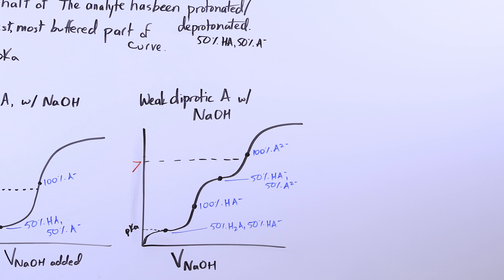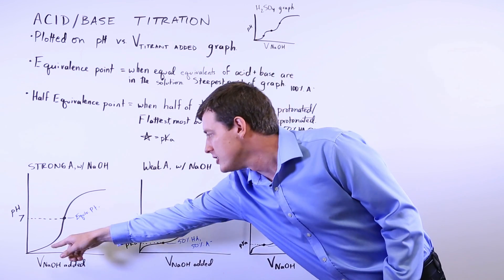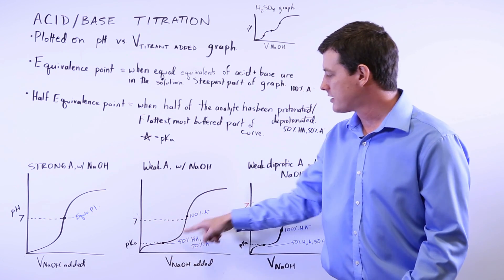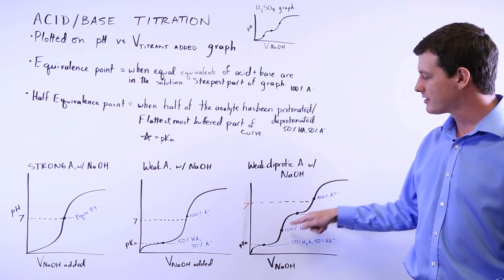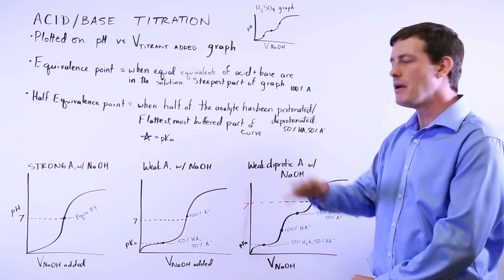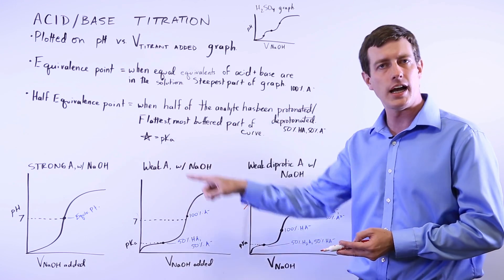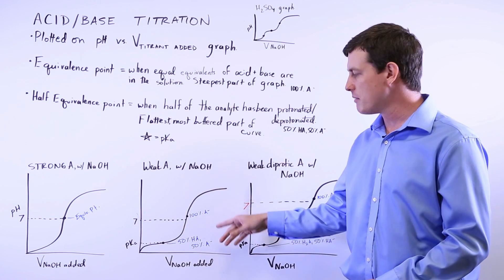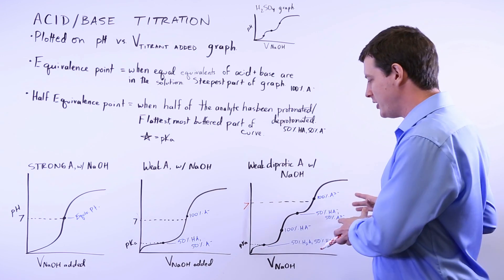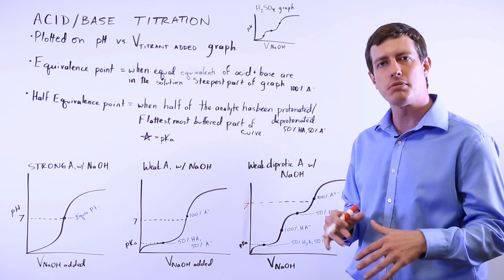So when your exam or a question bank asks you about titrations, be able to recognize these three distinct curve shapes. The strong acid being titrated with a base does not have a half equivalence point. A weak acid being titrated does have a half equivalence point. The diprotic acid has two half equivalence points and two equivalence points. Also recognize that if a base is being titrated with an acid, it will have a similar but inverted shape — starting high and ending low. Remember that an equivalence point is when all of the acid has been deprotonated, and a half equivalence point is when half of the deprotonation is done and half of the acid particles are still protonated.